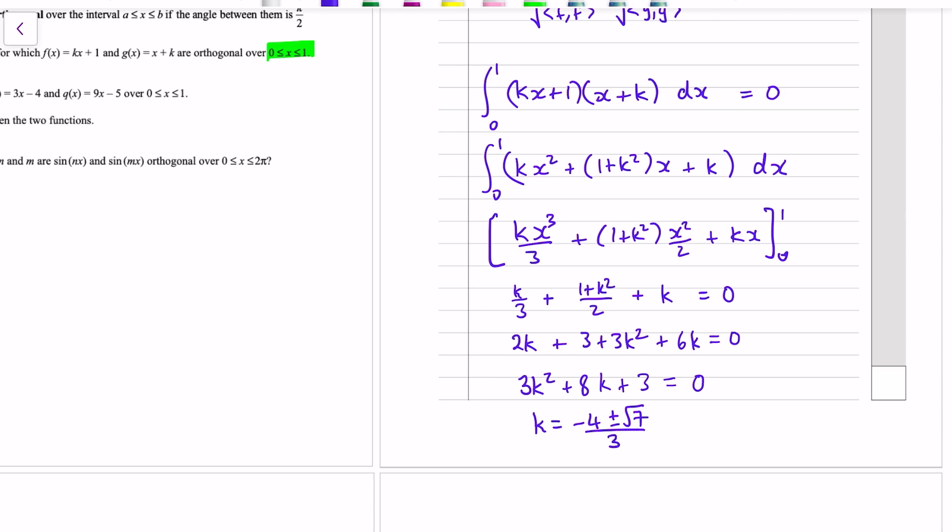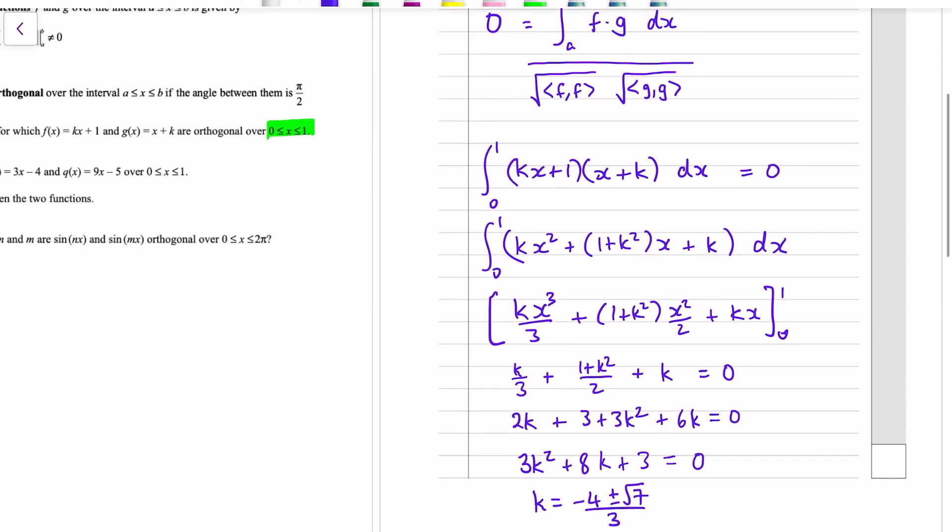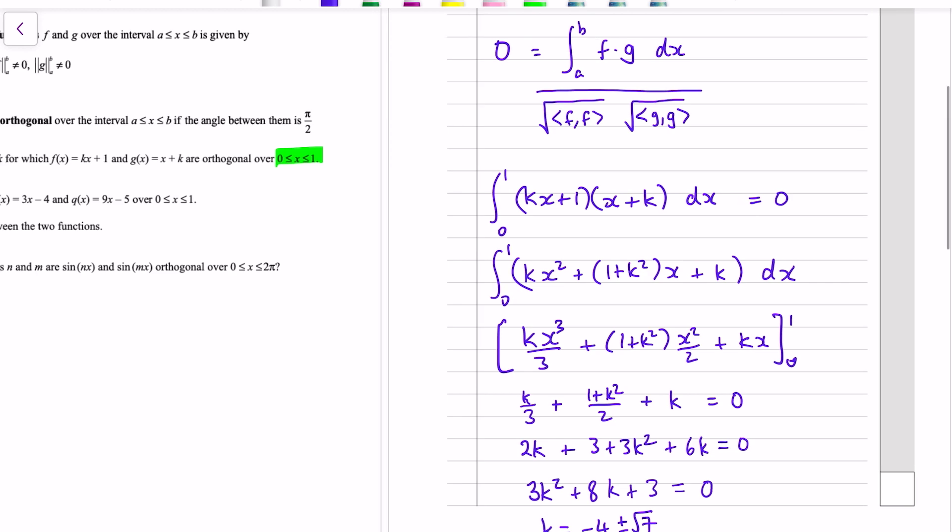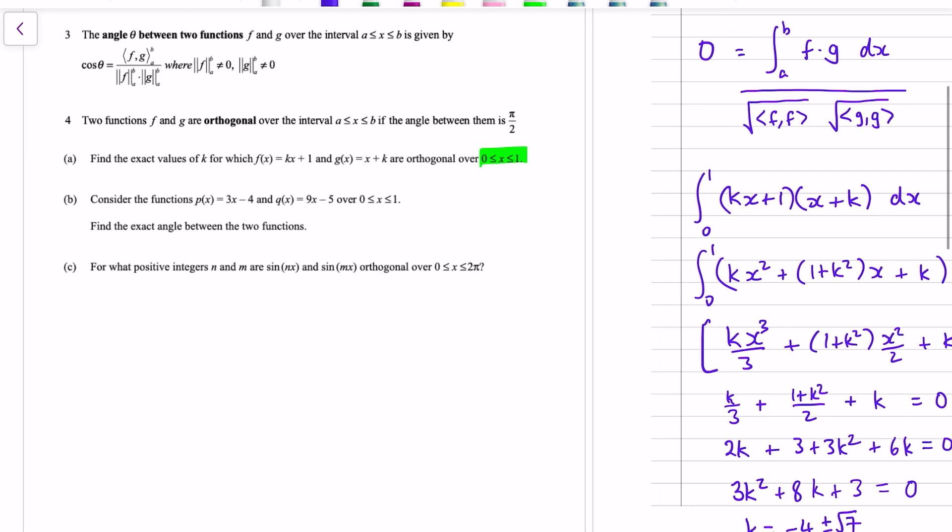Times through by 6 would be a good thing to get rid of the fractions. And now we have a quadratic equation, 3k squared plus 8k plus 3 equals 0. And if we solve that equal to 0 to find the exact values of k, we get k is equal to minus 4 plus or minus root 7 over 3. Okay, so back in 2013, the mark schedule gave us how the marks were allocated. And that was the 2 mark question.